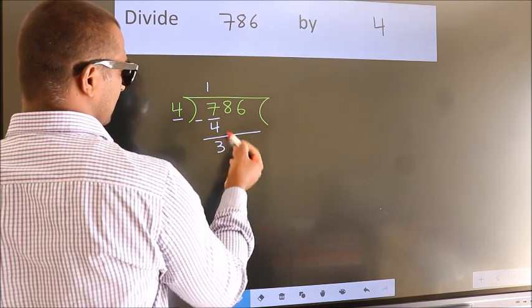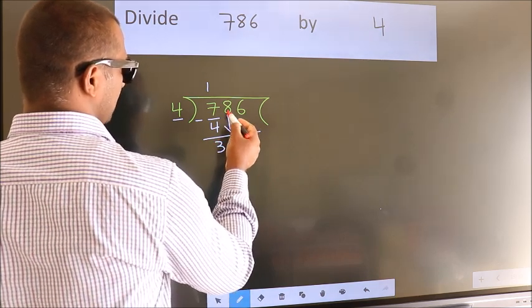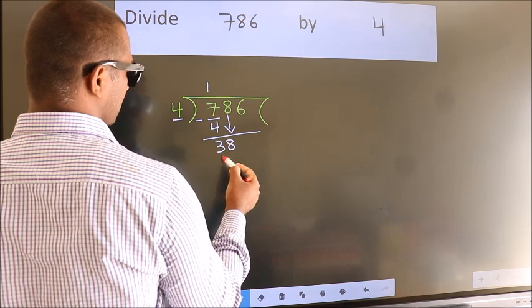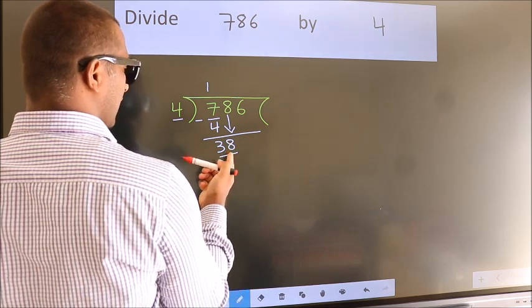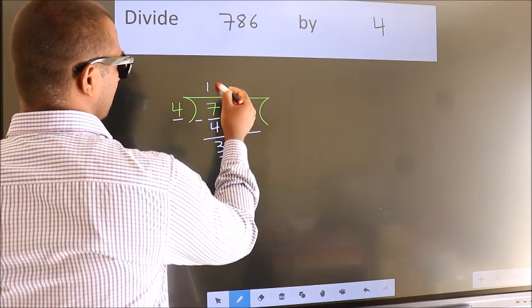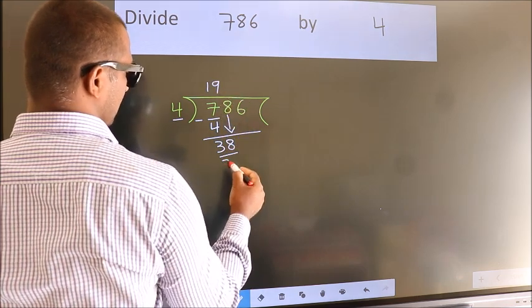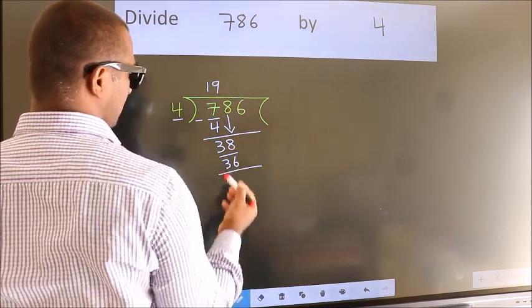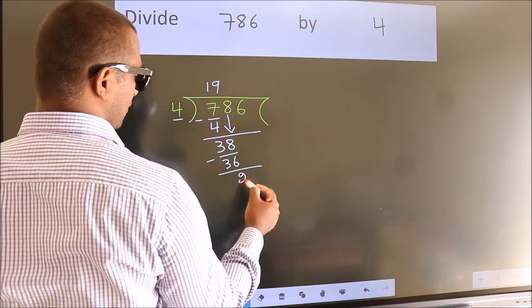After this, bring down the beside number. So, 8 down, making 38. A number close to 38 in the 4 table is 4 nines 36. Now, we subtract and get 2.